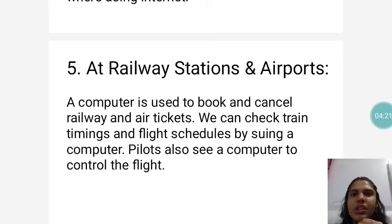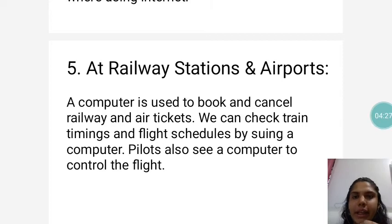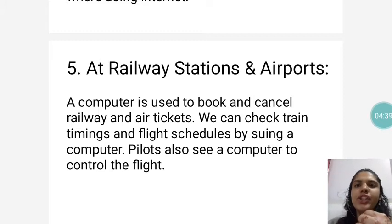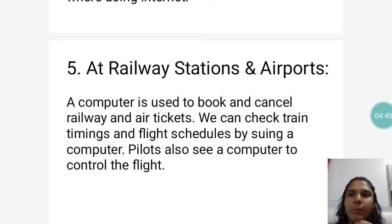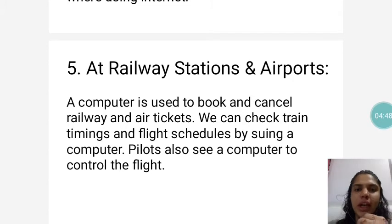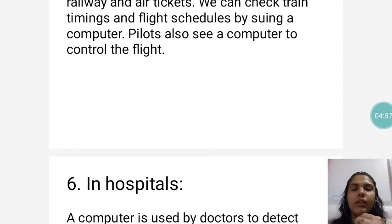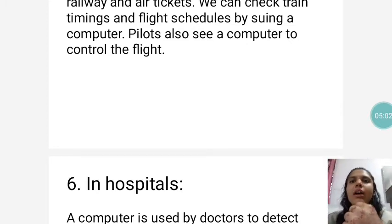Then, at railway stations and airports. A computer is used to book and cancel railway and air tickets. We can check train timings and flight schedules by using a computer. Pilots also use a computer to control the flight — they put the flight on automatic mode, which is a computer-controlled mode.